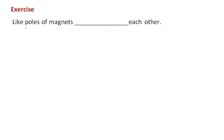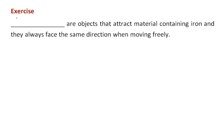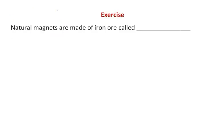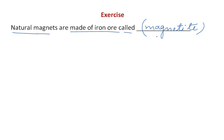The next problem is very simple: like poles of a magnet repel each other. Objects that attract material containing iron and always face the same direction when moving freely — we know these are magnets, which have both attractive and directional properties. Natural magnets are made of iron ore called magnetite. With this, I end the very interesting and important topic of Fun with Magnets. Thank you.